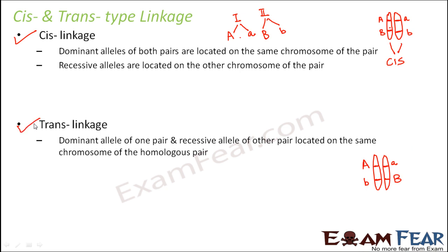How do we denote cis linkage and trans linkage? Cis linkage is denoted as capital A capital B slash small a small b — meaning capital A and capital B are located on the same chromosome, and small a and small b are located on the other chromosome, and these two chromosomes form the homologous pair. Trans linkage is denoted as capital A small b slash small a capital B — meaning capital A and small b are on the same chromosome, and small a and capital B are on the other chromosome of the homologous pair. This is the difference between cis and trans linkage.